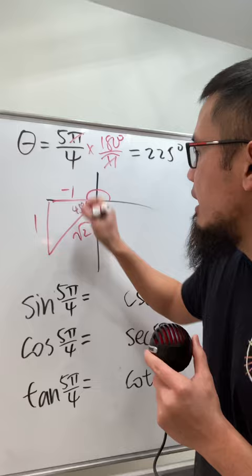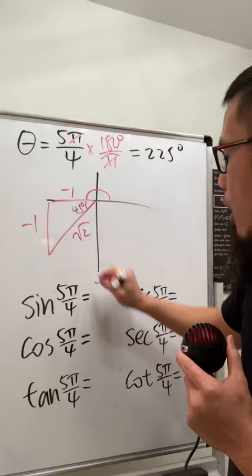Sine is going to be y over r, which is negative 1 over square root of 2. Cosine is going to be x over r, which is negative 1 over square root of 2.